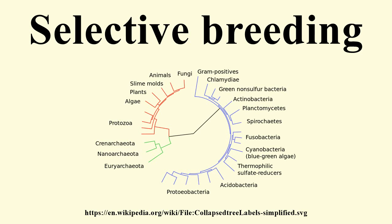Channel catfish growth was seen to increase by 12% to 20% in selectively bred Ictalurus punctatus. More recently, the overall response to selection for improved growth rate was found to be approximately 80%, i.e., an average of 13% per generation.